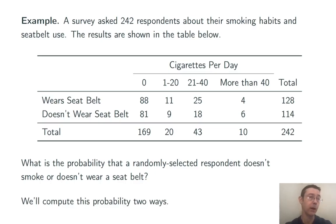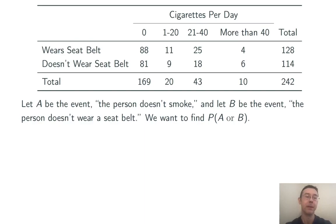There are at least two ways to do this problem. We'll do it both ways and hopefully get the same answer each time. Let's let A be the event that the person doesn't smoke and B be the event that the person doesn't wear a seat belt. So the question we're really trying to answer here is the probability of A or B. The probability of A union B.